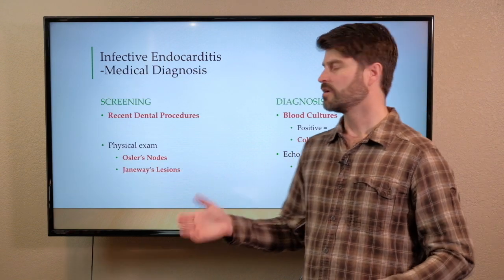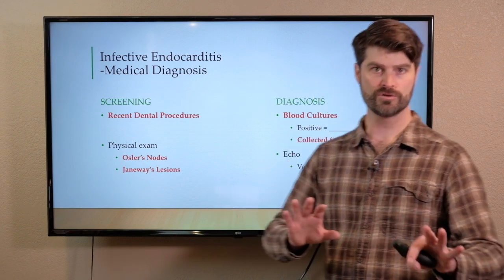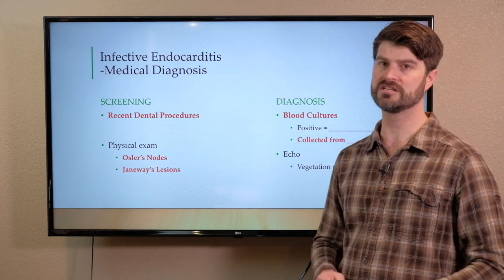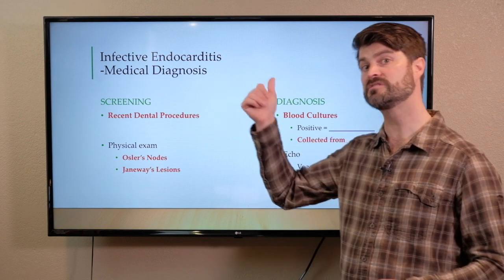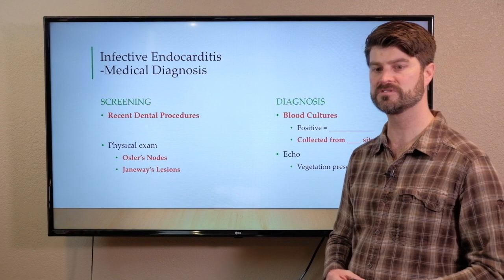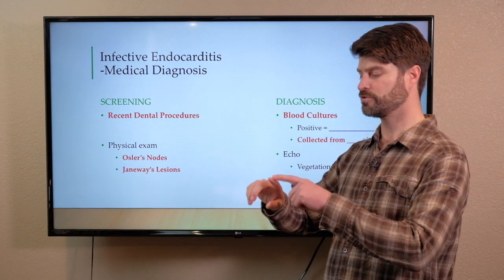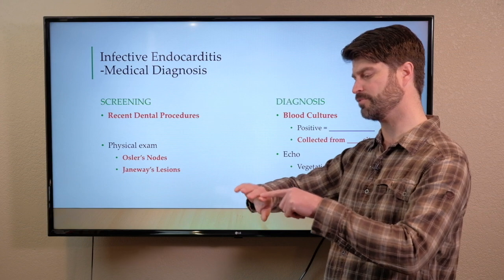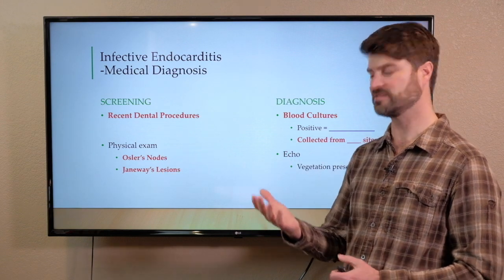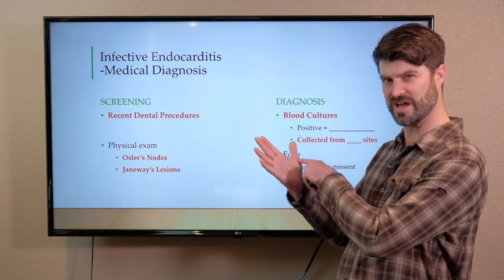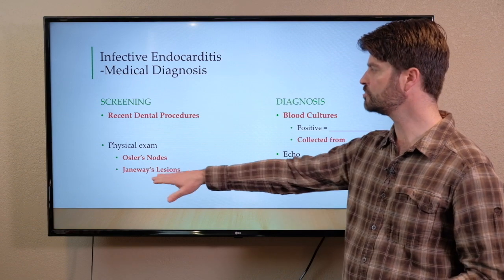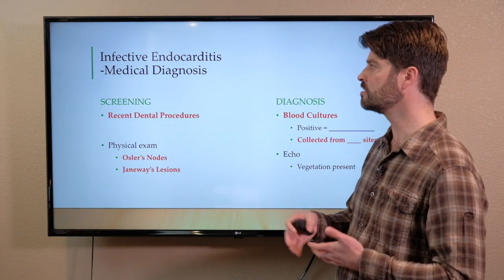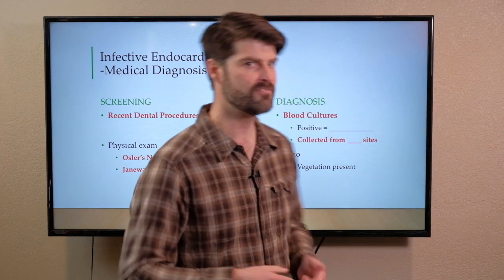For medical diagnosis, first we screen patients to identify who's at risk for infective endocarditis. IV drug use is a big screening tool. Recent dental procedures is another big question we ask when we start to suspect an infective endocarditis presentation. We're also looking for Osler's nodes — those little papules over the knuckles that can open up — Janeway's lesions, which are little hemangioma-like reddened areas on the hands, and those splinter hemorrhages. Those are our three very unique findings that cue us that a patient may have infective endocarditis.